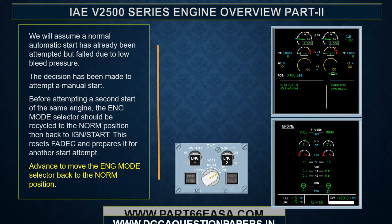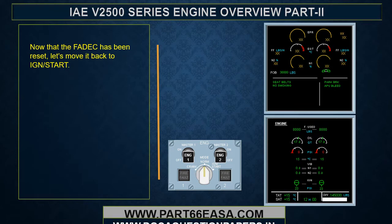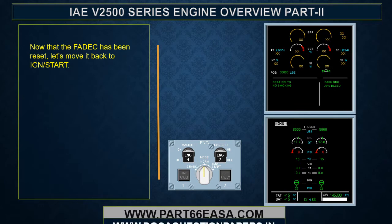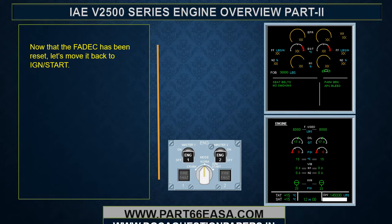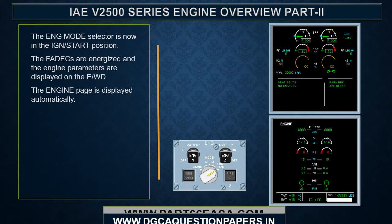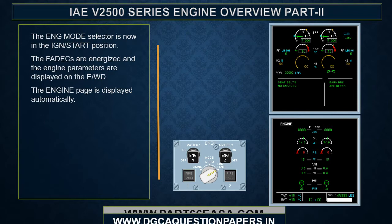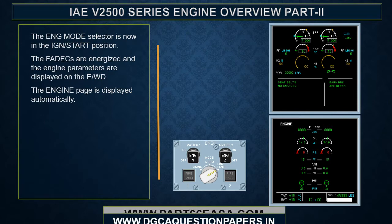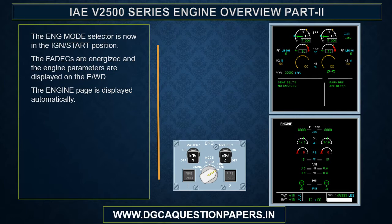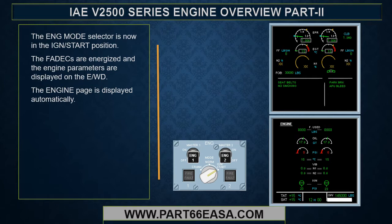Move the engine mode selector back to the norm position. Now that the FADEC has been reset, move it back to ignition start. The engine mode selector is now in the ignition start position. The FADECs are energized and the engine parameters are displayed on the EWD. The engine panel is displayed automatically.